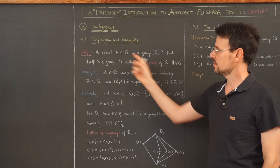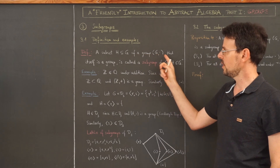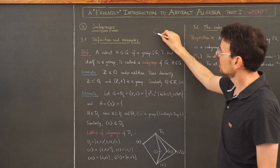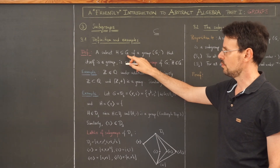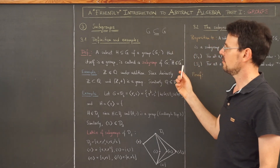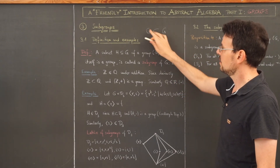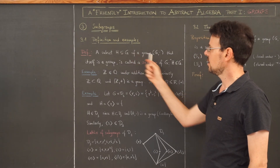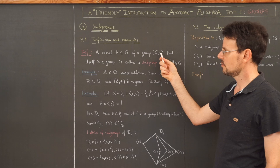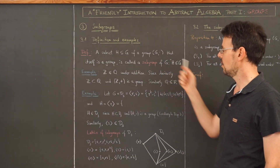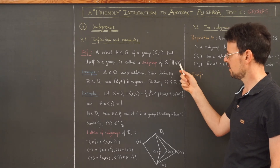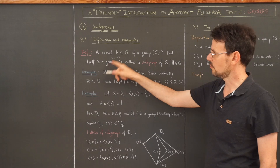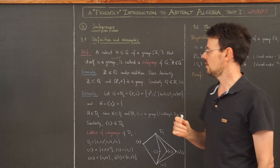The definition is pretty obvious. We take a subset H of a group G with operation dot — this symbol means subset, and it is allowed that the subset is the whole group. If I write it with a strict symbol that means it is a proper subset, not equal to the whole set. If this subset is itself a group with respect to the same group operation dot, then it is called a subgroup of G, denoted H ≤ G. To be clear, H is a group with respect to the operation in the larger group.